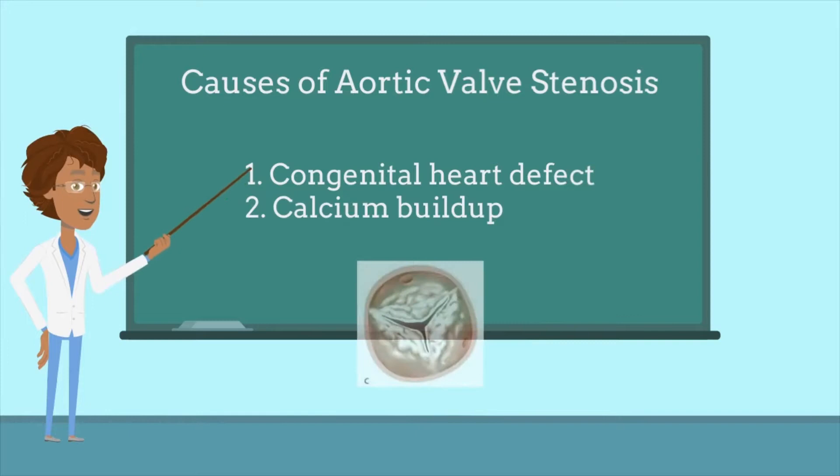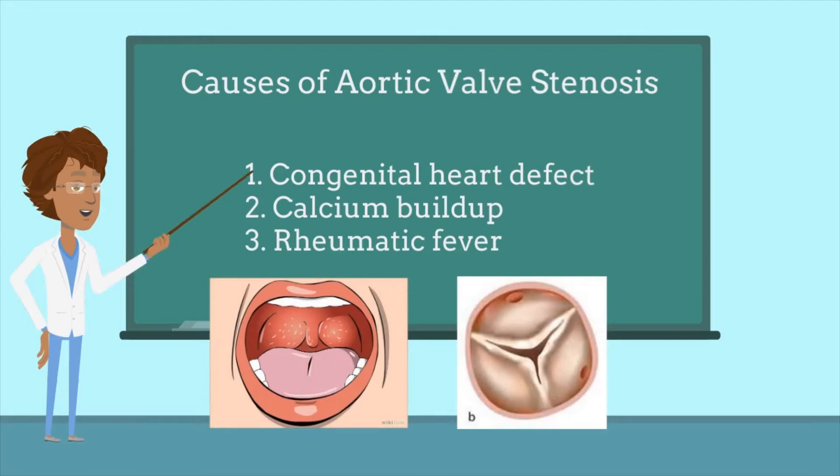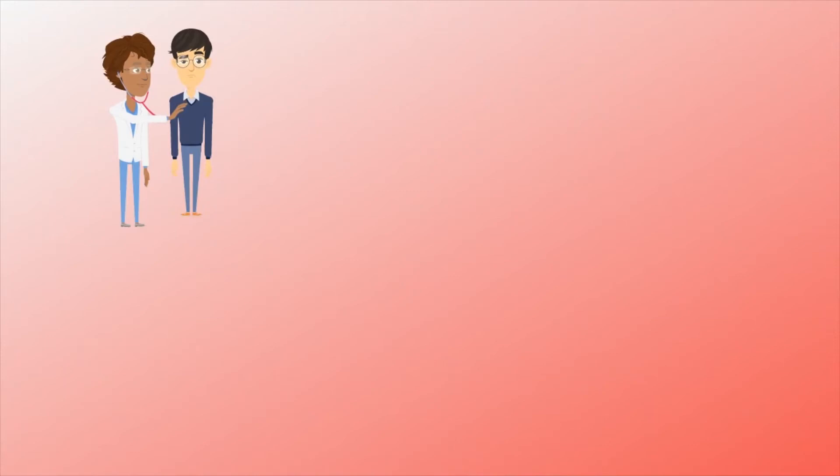Another cause that occurs much later in life is a gradual buildup of calcium in the aortic valve. Calcium is an important mineral in our body, and over time it may build up and cause stiffness in the aortic valve. Finally, the last cause is a possible side effect of strep throat called rheumatic fever, which leads to scar tissue developing in the heart and can also cause aortic valve stenosis.